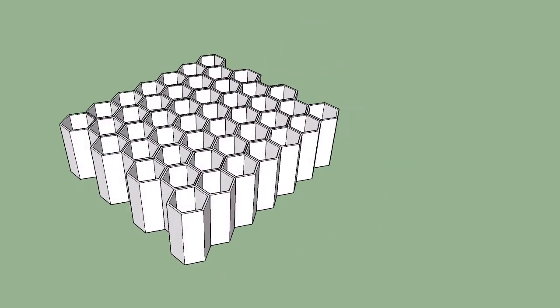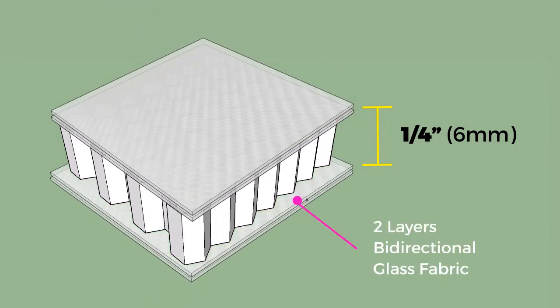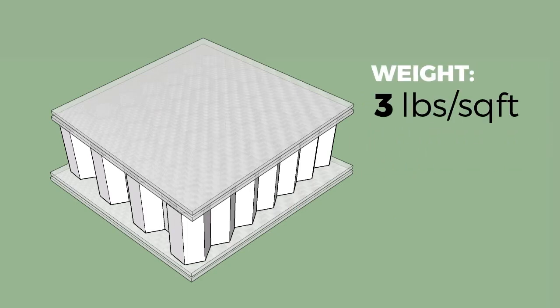The spire form, designed for seawall protection, uses a proprietary honeycomb FRP layer for extra strength that is covered by two layers of bi-directional glass fabric on each face. The waterproof form is less than half an inch thick and weighs only three pounds per square foot.